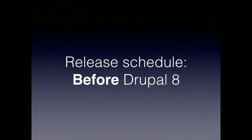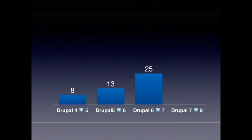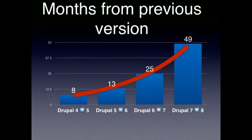The release schedule before Drupal 8: from Drupal 4 to Drupal 5 took 8 months to develop. Drupal 5 to Drupal 6 took 13 months. Drupal 6 to Drupal 7 took 25 months. Anyone want to guess if that's going to go up or down from Drupal 7 to Drupal 8? 49 months. I wasn't heavily involved with core development in the Drupal 7 to Drupal 8 cycle.